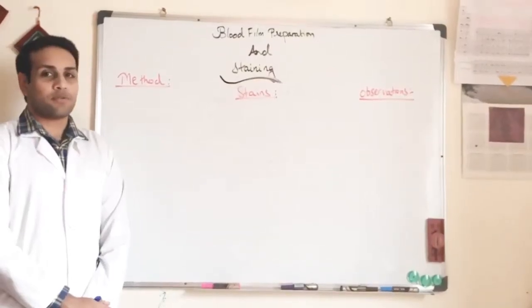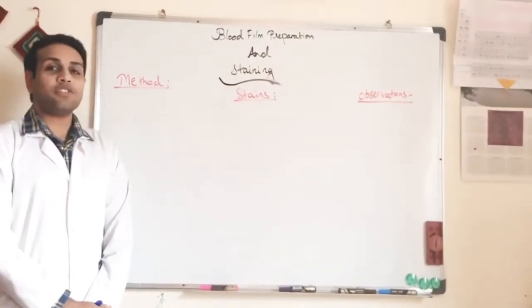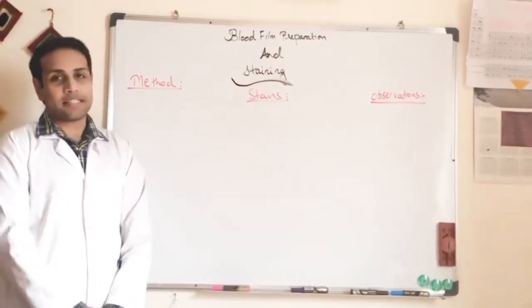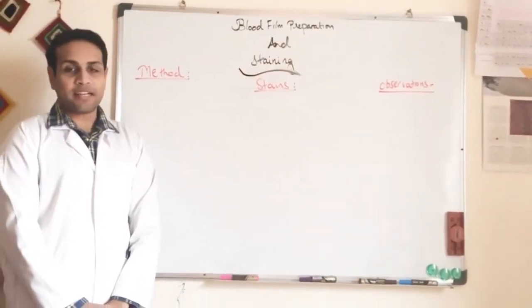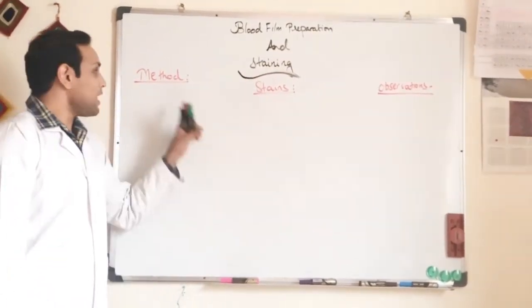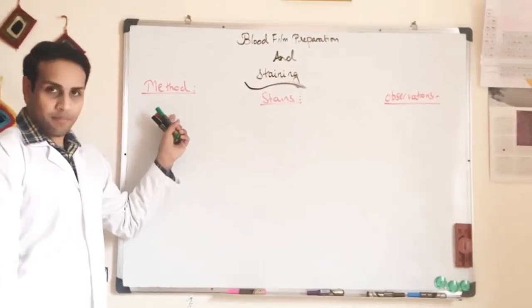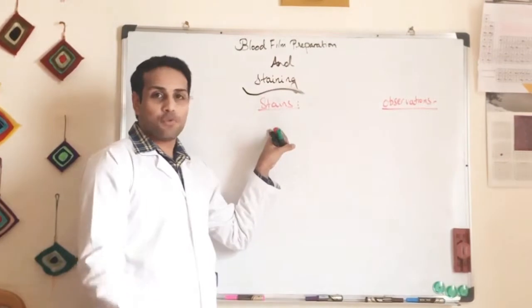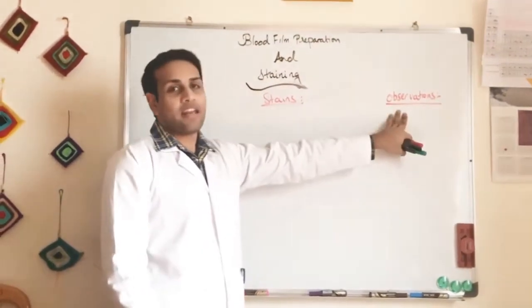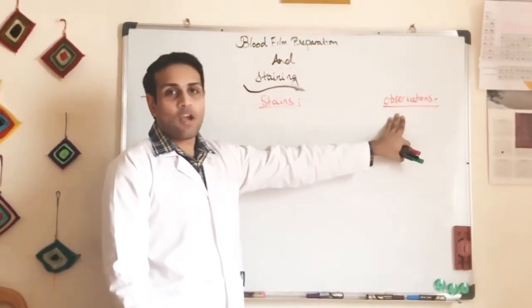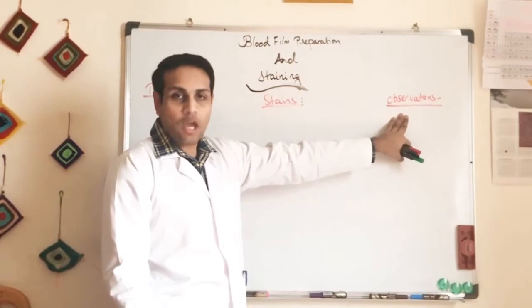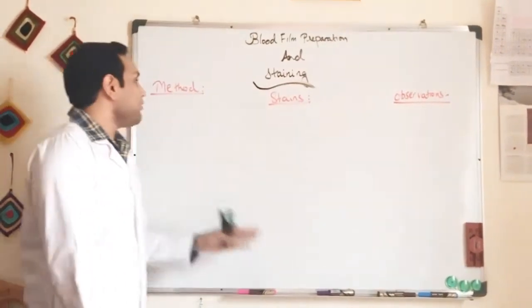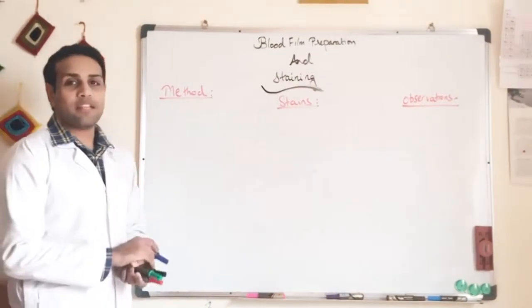Welcome to this tutorial on blood film preparation and staining. The objectives include the method of performing a blood smear, the different types of stains we can use, and what we used during this practical. Finally, after staining, we will look at what observations we can see while focusing the slide under the microscope.